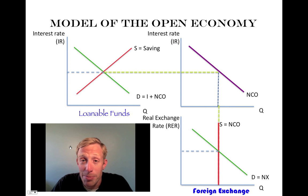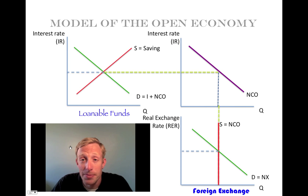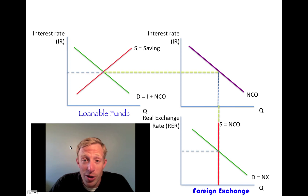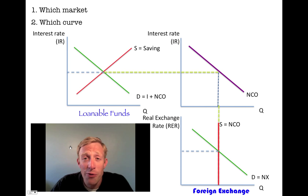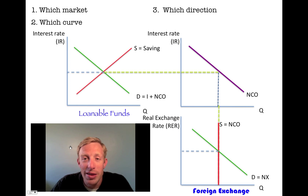Where things get complicated is if something in one of these markets changes — that's going to affect the other market and can easily affect the position of our bridge. The process for figuring out how a change affects the model is: first, find which market is affected; then find which curve is affected and which direction it moves; and finally, find the new equilibrium in that market and consequently the new equilibrium in the other market.